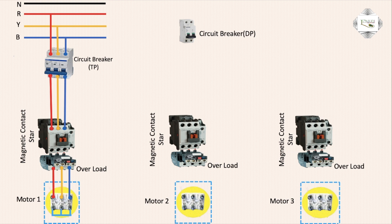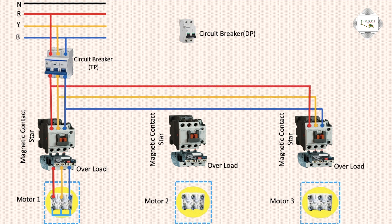The motor star connection is made by shorting the W2, V2, U2 terminals together to form the star point. The same process is used for the second motor connection, with the input going to the magnetic contactor.